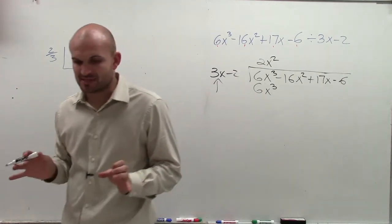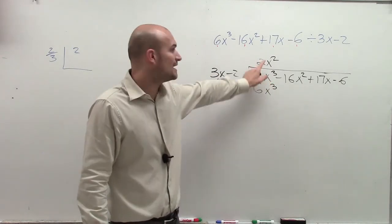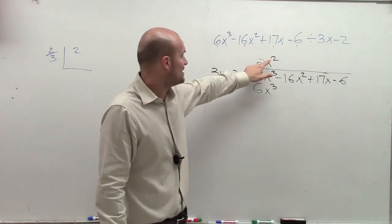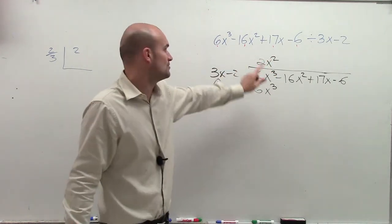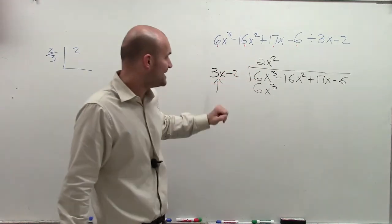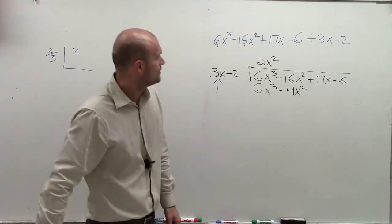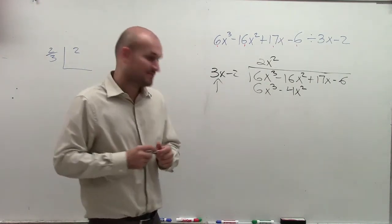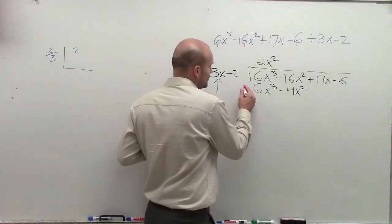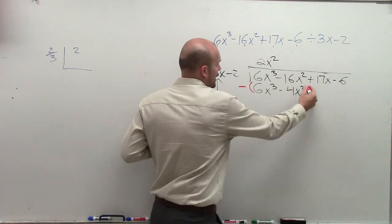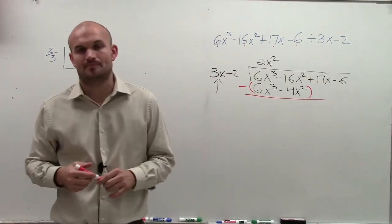But here's where students make the mistake. I know I'm only dividing the first term into that first term. But then, once I get my part of my quotient, I multiply this times both of these terms. So 2x squared times 3x is 6x cubed. 2x squared times negative 2 is going to give you a negative 4x squared. Now, here's where the next big mistake is. So you have to multiply by both of them. Then you have to subtract both rows. So watch what I do. I put parentheses around the whole row, and I put a subtraction sign. The reason why I do this is because so many students forget to subtract the whole row.